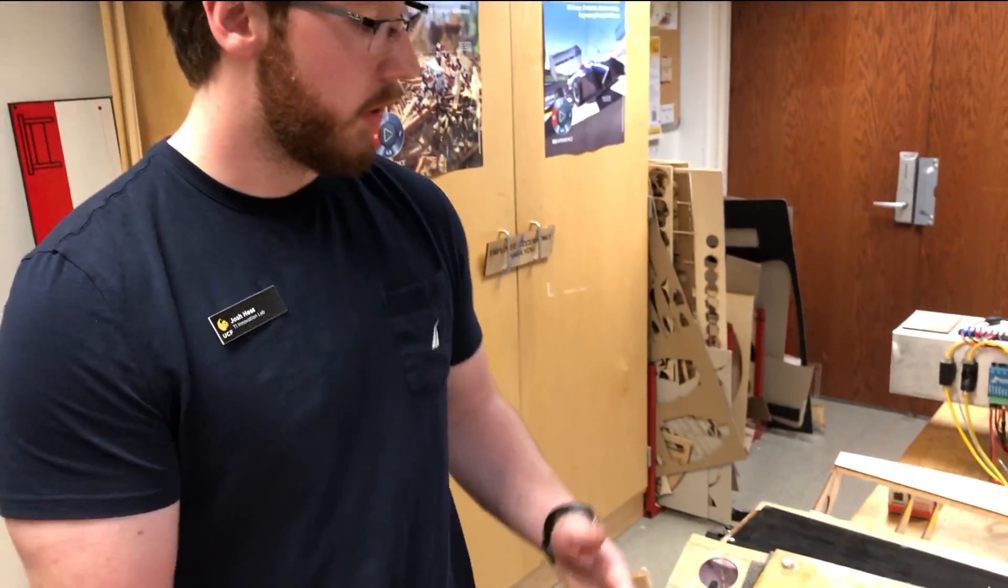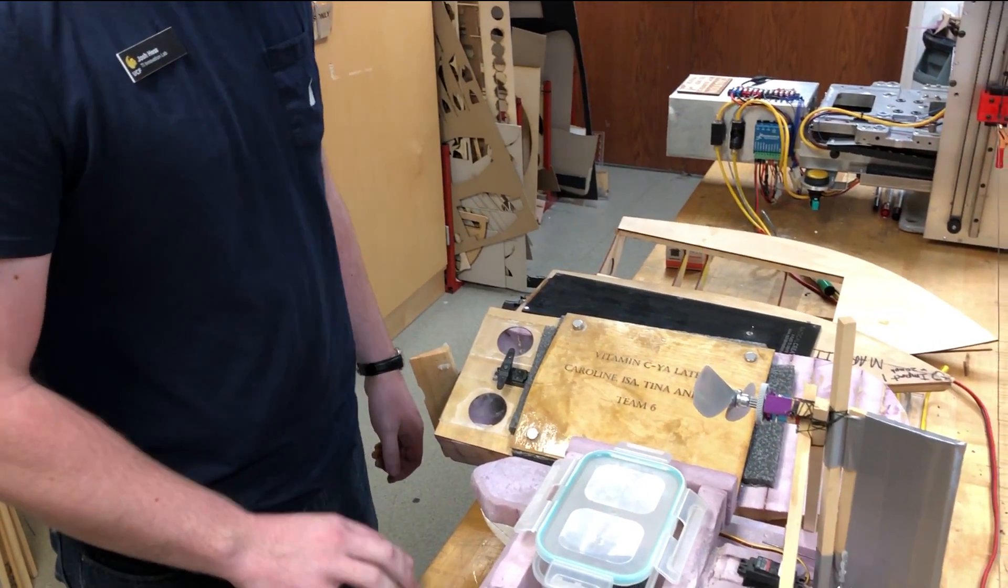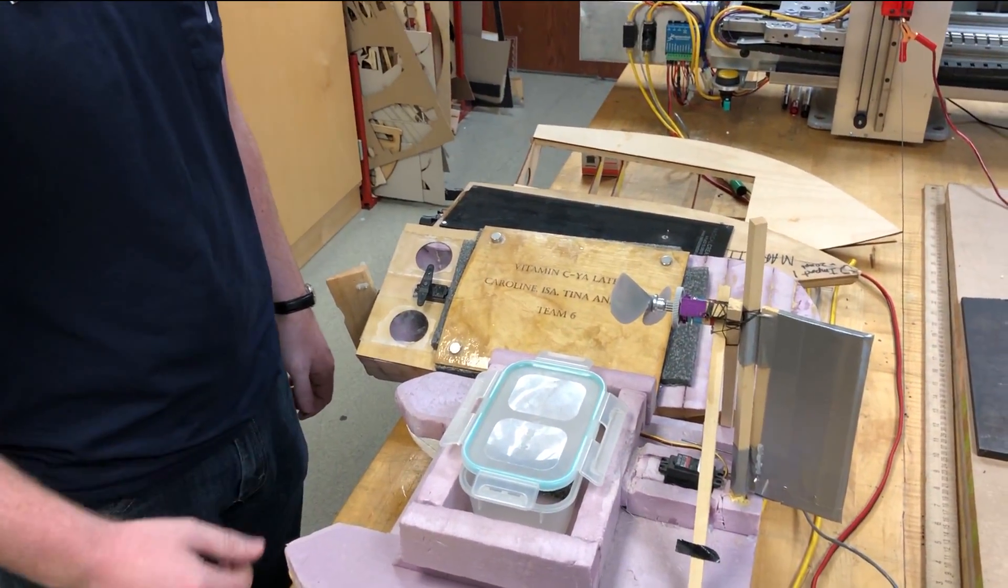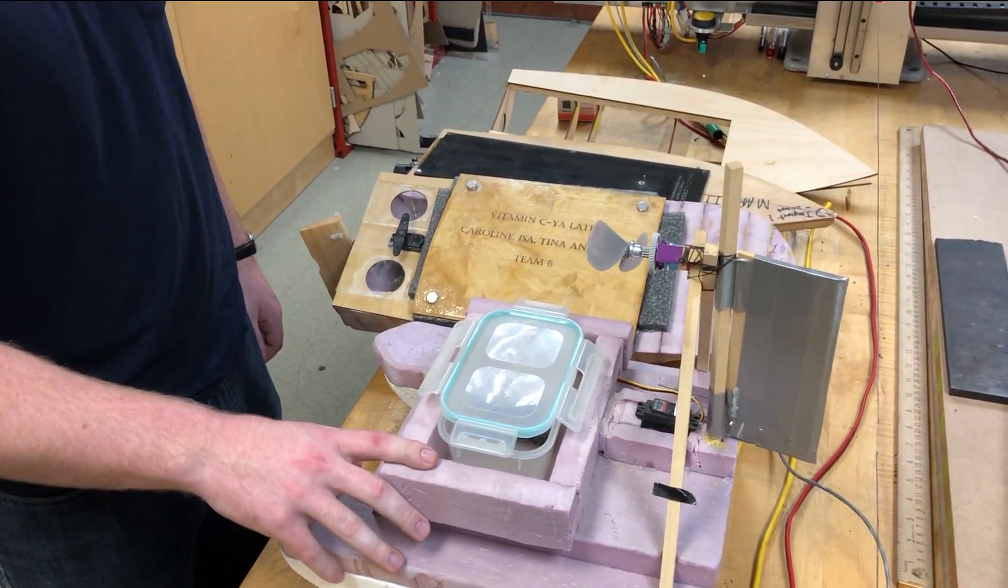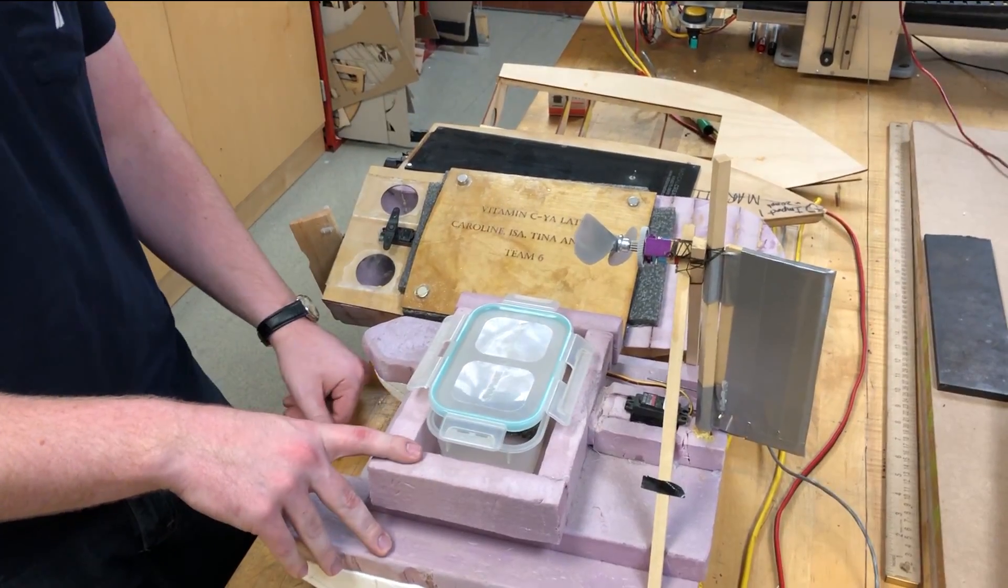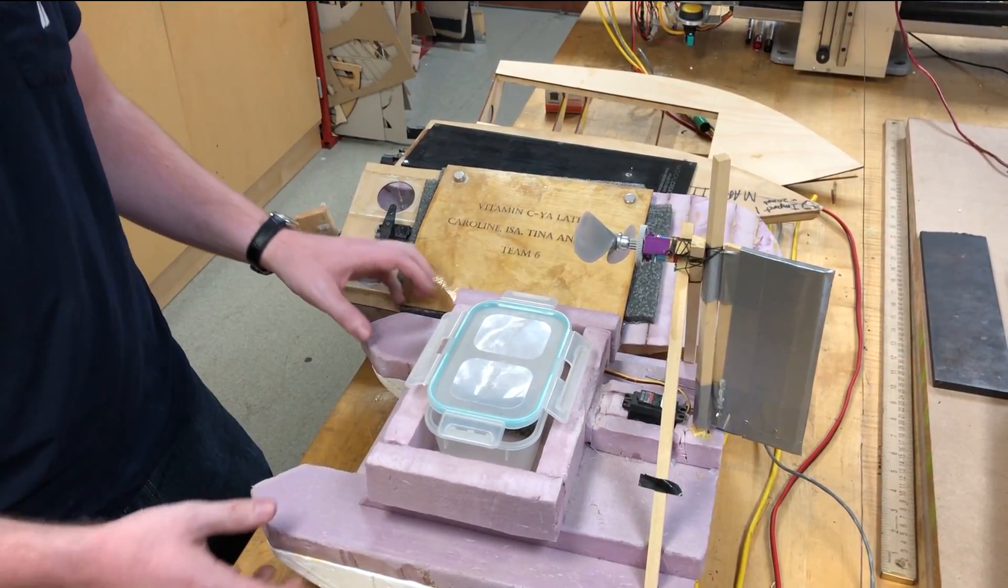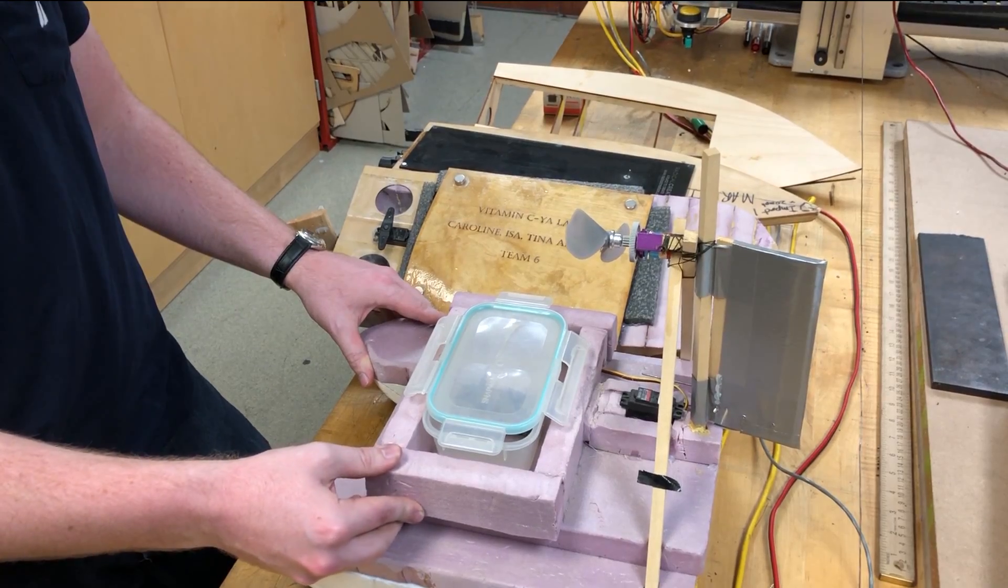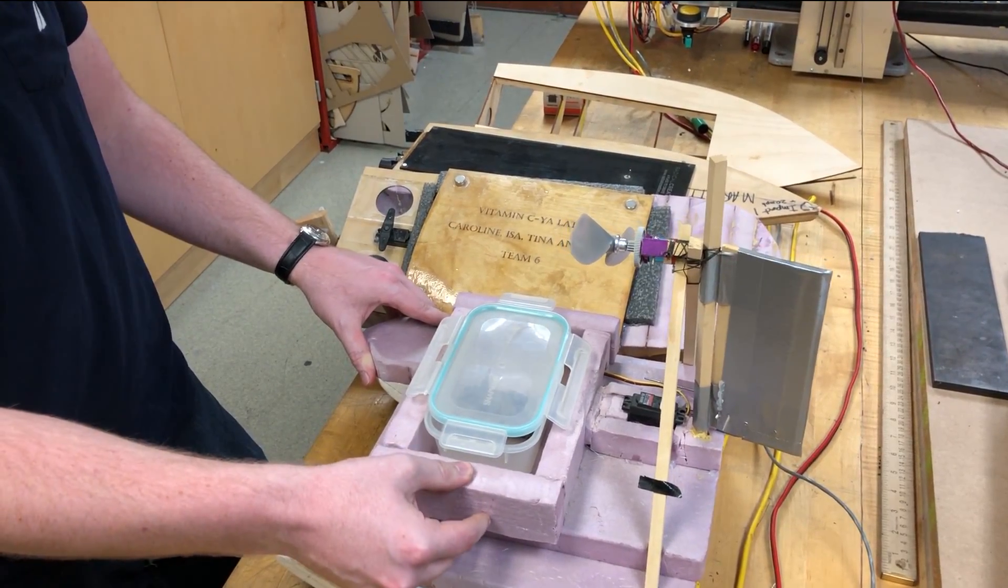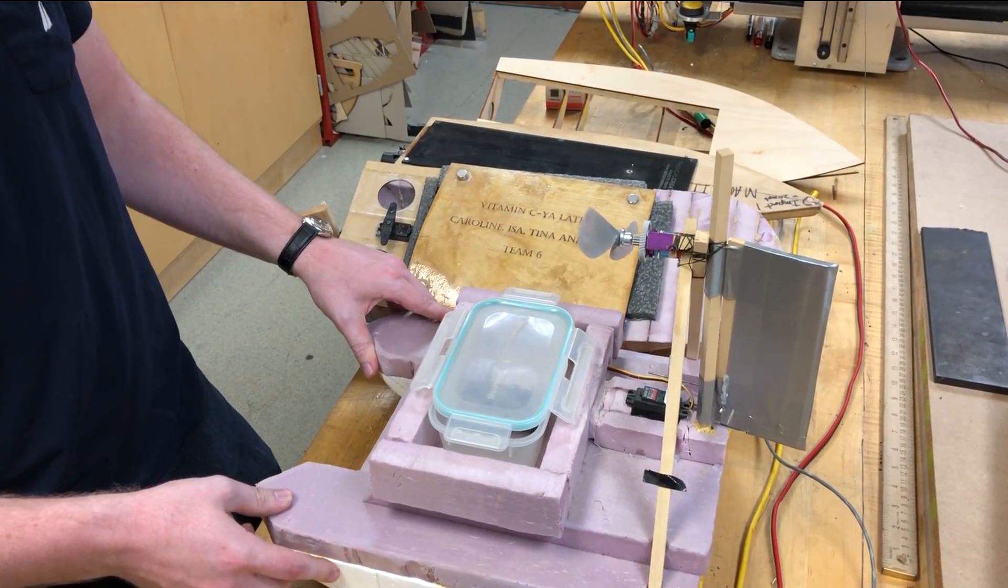Alright, so now I'm going to go over a couple different designs that you can use when making your boat. Here I have an assortment of previous boats from previous years. These ones here are probably the easiest design to go with. This is a high density foam that you can get at Home Depot. It's fairly inexpensive and really easy to work with.